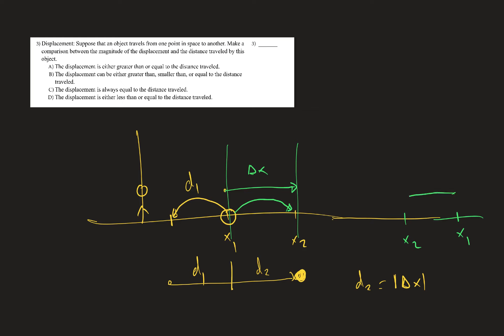For example, if x1 is 100 and x2 is 90, then delta x is minus 10 — a negative displacement. The distance you travel is 10 meters if you go directly, but it's always a positive quantity. Displacement has a sign while distance does not. The one situation where displacement equals distance is when you move directly from one point to the other without reversing direction.